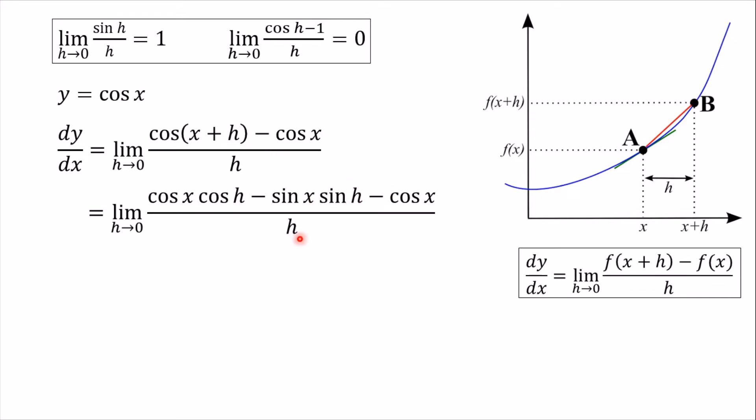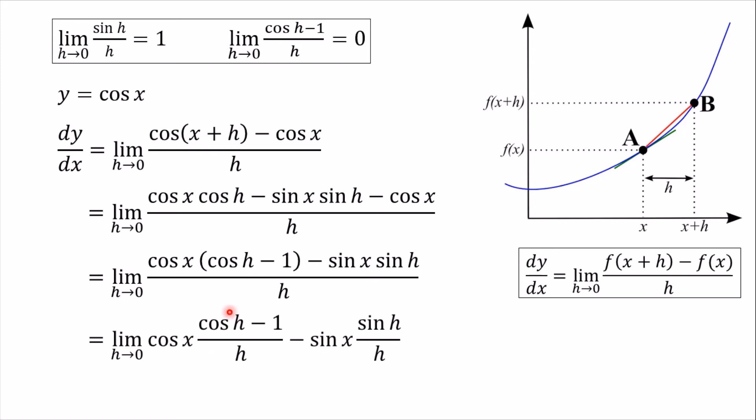And then I can take out a common factor this time of cosine x. So I've got cosine of x into cos h for that one and minus one for that one. And then I can take the cos x out and the sin x out and write it as two separate fractions. And I get this function here. And then if I return to these rules that we found earlier, I know that this one equals zero. So all of that term is going to disappear. This one equals one. So we end up just with minus sine x or negative sine x.